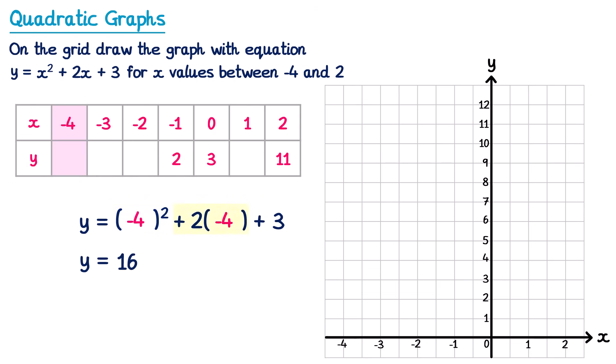Now we look at two lots of negative 4, which is negative 8, and then plus 3. So we do 16 subtract 8 which is 8, then add 3 to get 11. So y will be 11. When x is equal to negative 4, y is equal to 11, so we put 11 into the table.